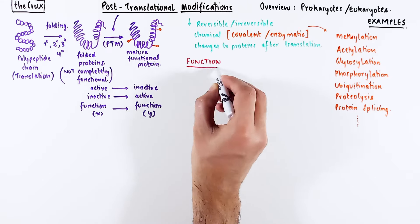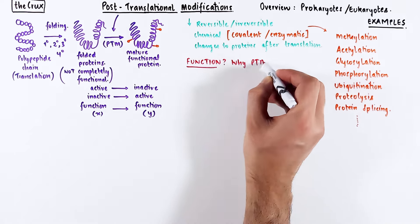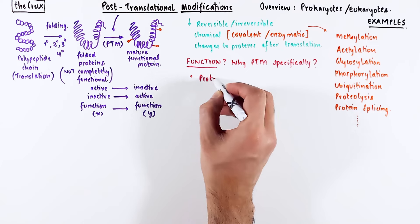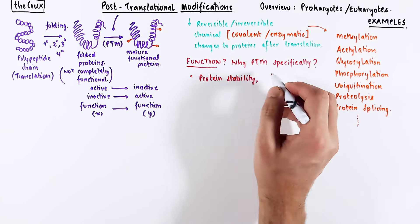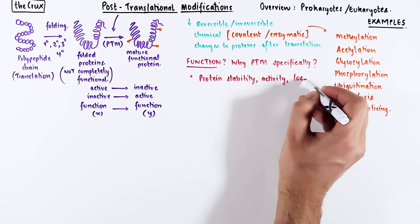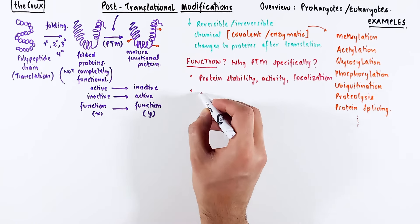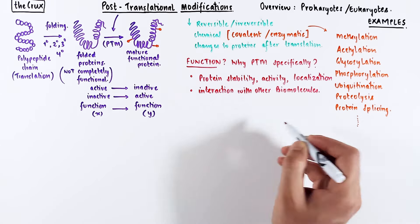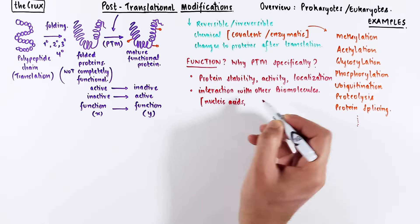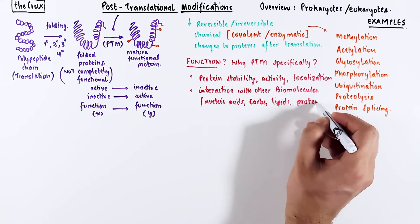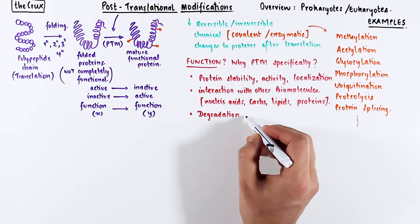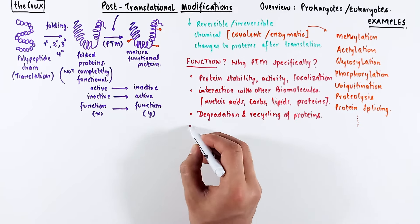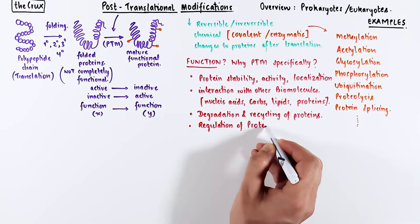What function can post-translational modifications serve? Generally speaking, everything is dependent on these modifications. Specifically, they affect protein stability, activity, localization, and they can control the interaction of proteins with other biomolecules like nucleic acids, carbohydrates, lipids, or other proteins. A major impact is to control the degradation rate and recycling of proteins, and they generally regulate protein activity in the cell.